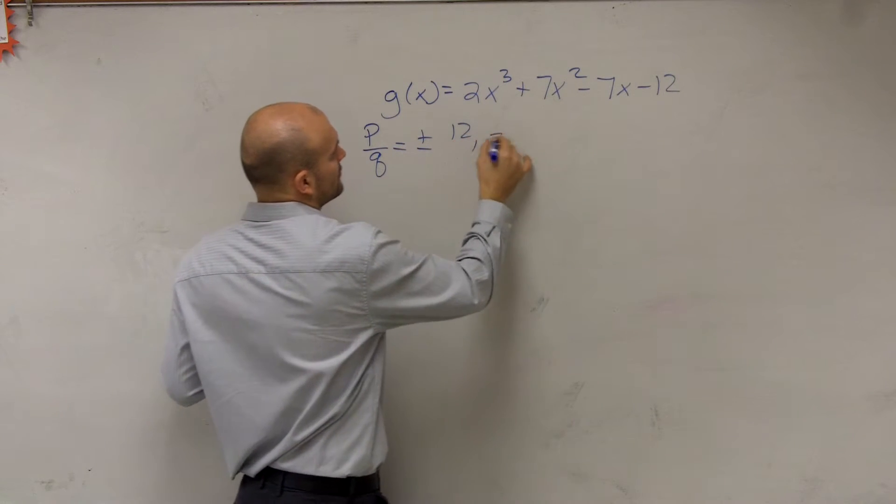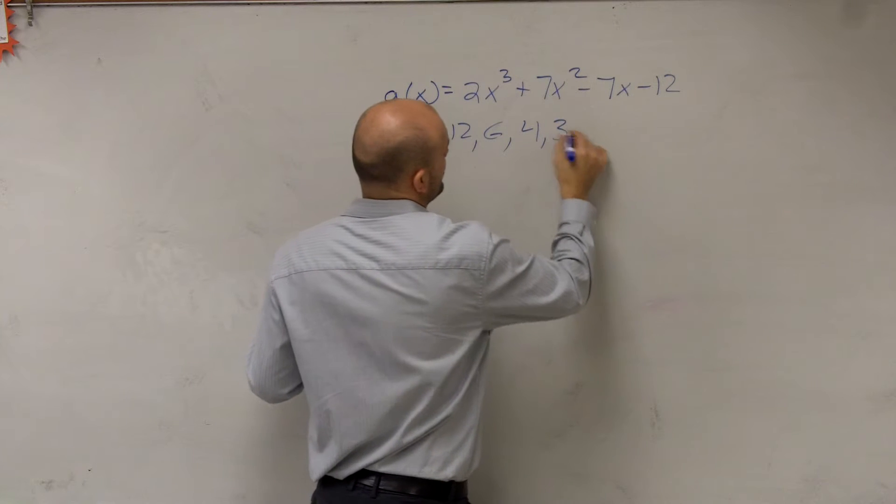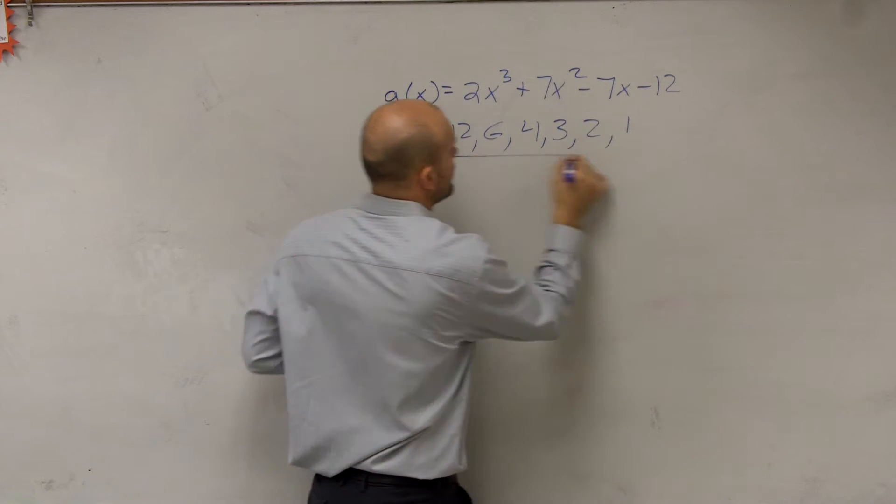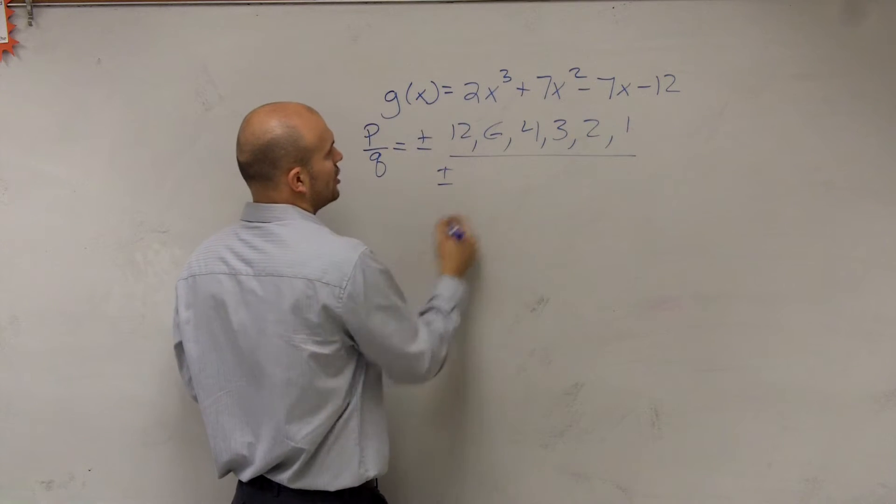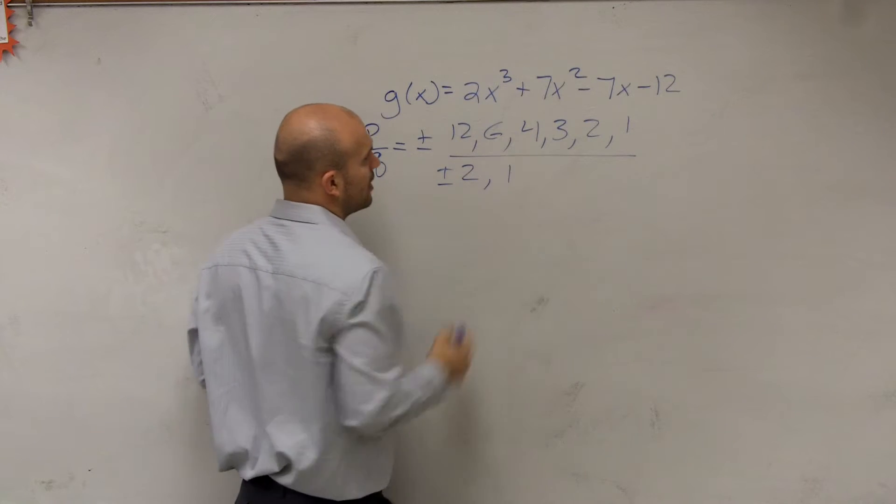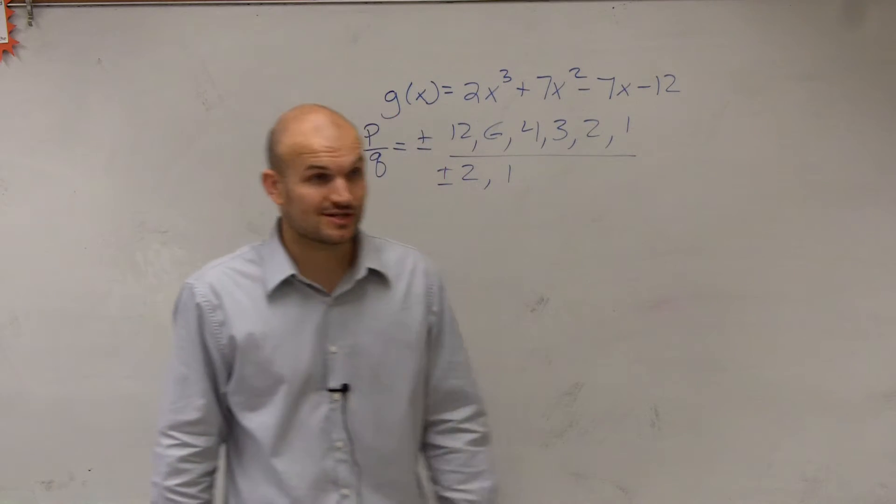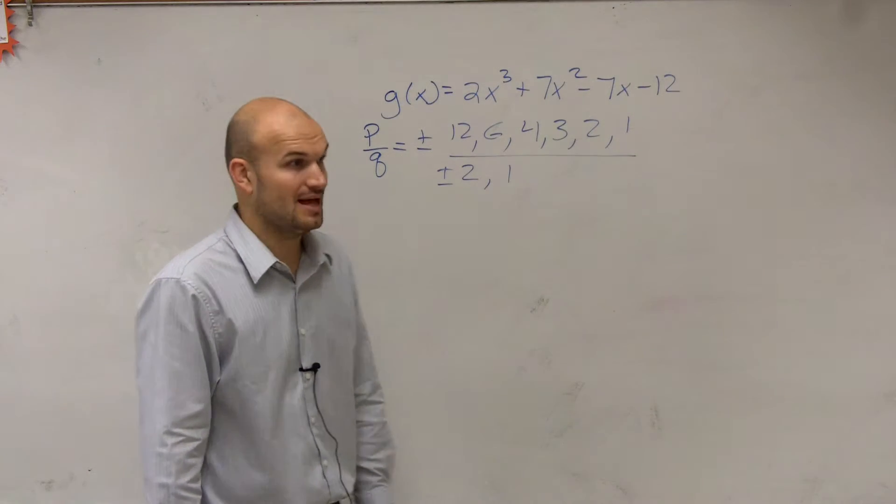Equals plus or minus 12, 6, 4, 3, 2, 1, over plus or minus all the values of 2 and 1. So there's a lot of possible rational zeros, right? A lot of them.